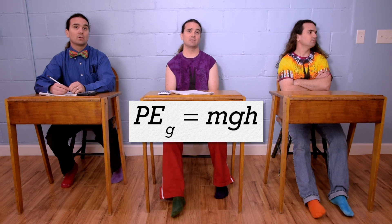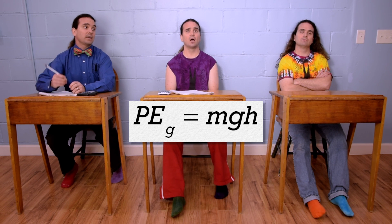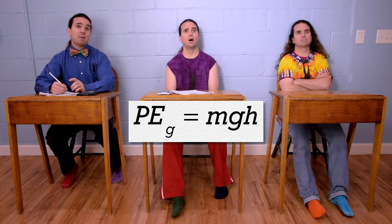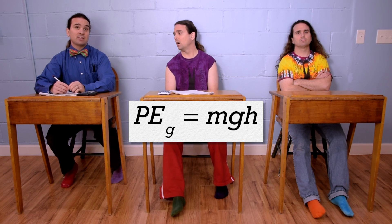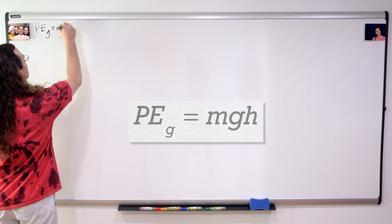Gravitational potential energy equals the mass of the object times acceleration due to gravity times h, where h is the vertical height above the horizontal zero line. And remember, we have to decide where to set the horizontal zero line in order to use this equation.